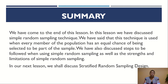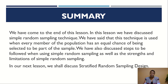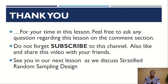With that, we have come to the end of this lesson. In this lesson, we have discussed simple random sampling technique — that this technique is used when every member of the population has an equal chance of being selected to be part of the sample. We have also discussed the steps followed when using simple random sampling technique, and the strengths and limitations of simple random sampling. In our next lesson, we shall discuss the second random sampling technique, which is stratified random sampling design.